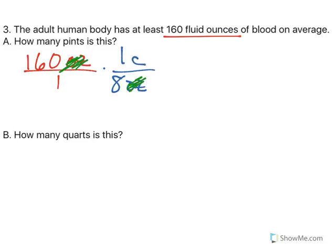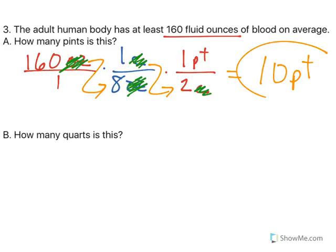Eight ounces is one cup. Ounces on the top cancels out with ounces on the bottom, opposite spots. Well, then you know that two cups is one pint. So, cups, cups, I'm now left with pints. So, 160 divided by 8, divided by 2, gives me 10 pints. The human body has approximately 10 pints of blood.